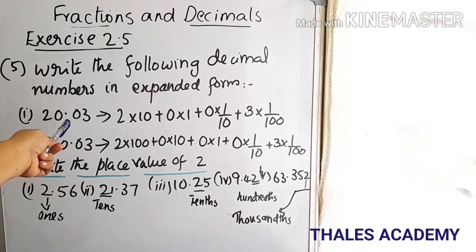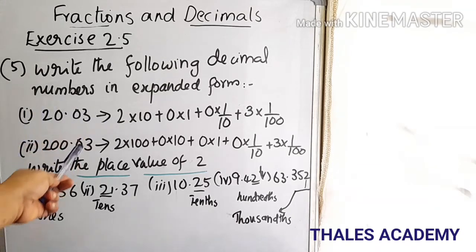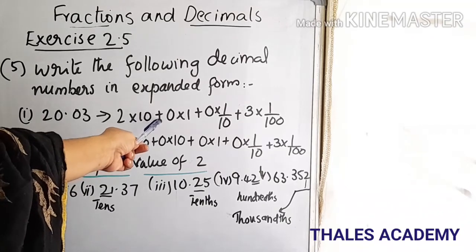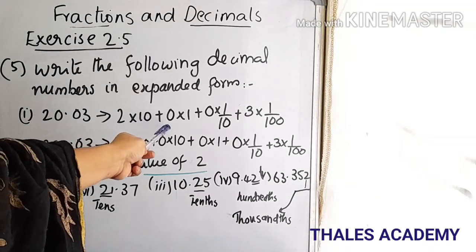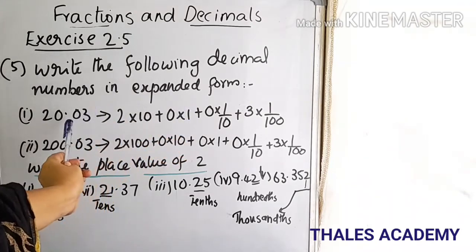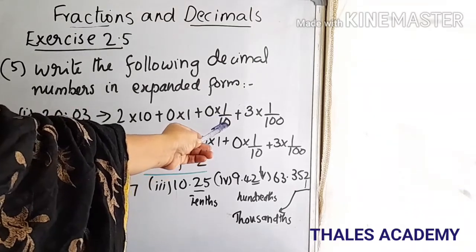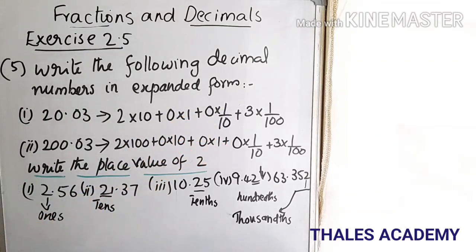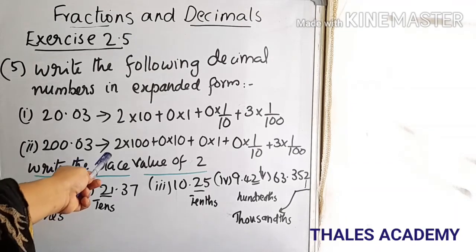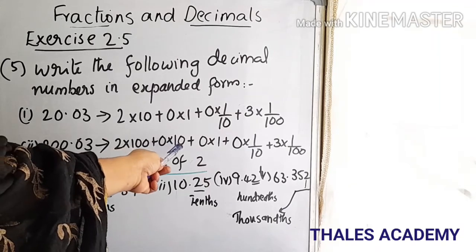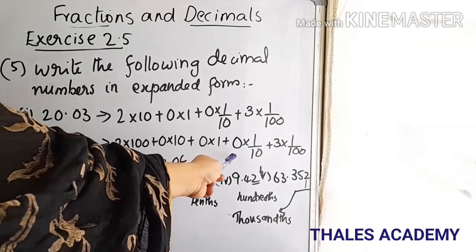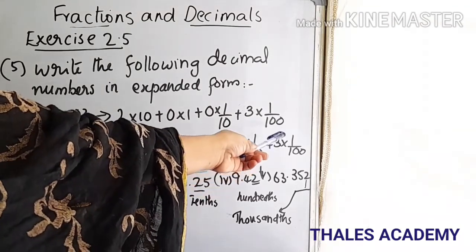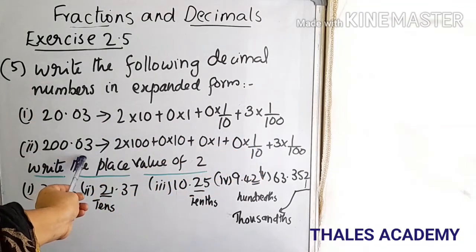Write the following decimal numbers in expanded form. 20.03 can be written as 2 into 10 plus 0 into 1 plus 0 into 1/10 plus 3 into 1/100. The second question, 200.03, is written as 2 into 100 plus 0 into 10 plus 0 into 1 plus 0 into 1/10 plus 3 into 1/100.